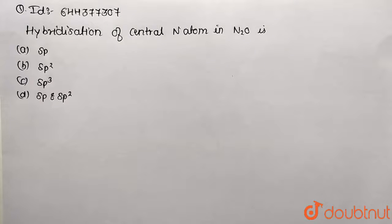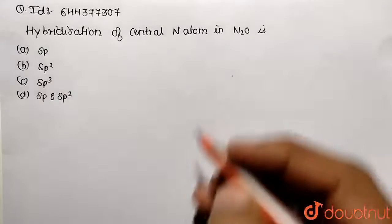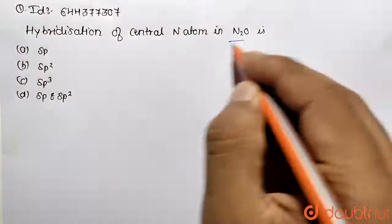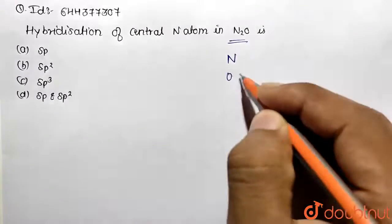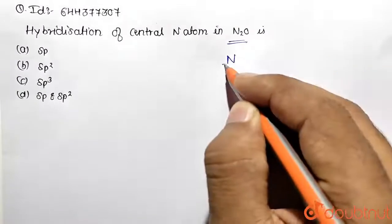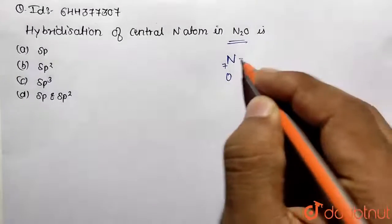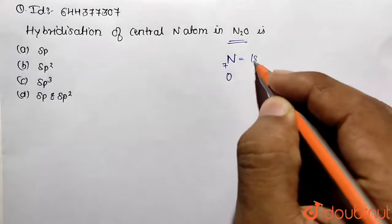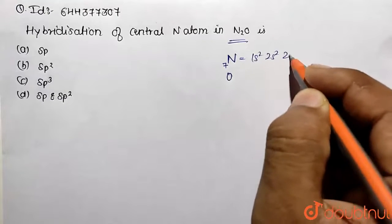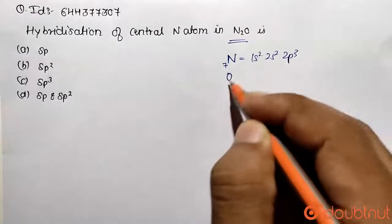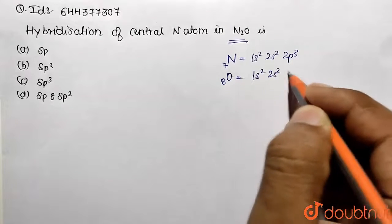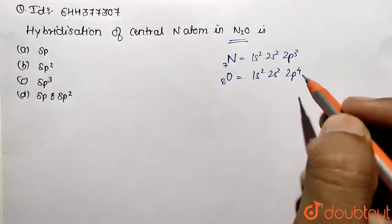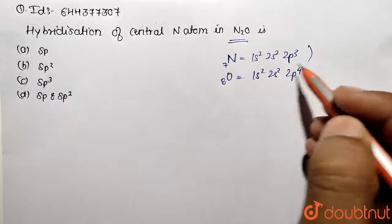In this question, we need to give the hybridization of the central nitrogen atom in the N₂O molecule. N₂O is formed from two elements: nitrogen and oxygen. Nitrogen has atomic number 7, with configuration 1s² 2s² 2p³. Similarly, for oxygen: 1s² 2s² 2p⁴.